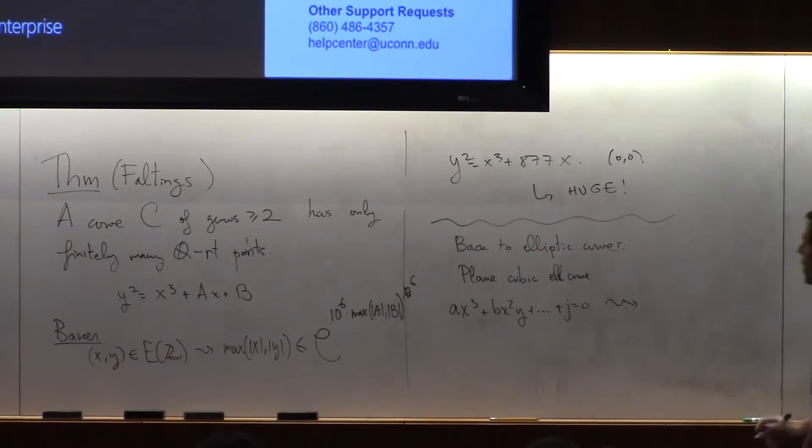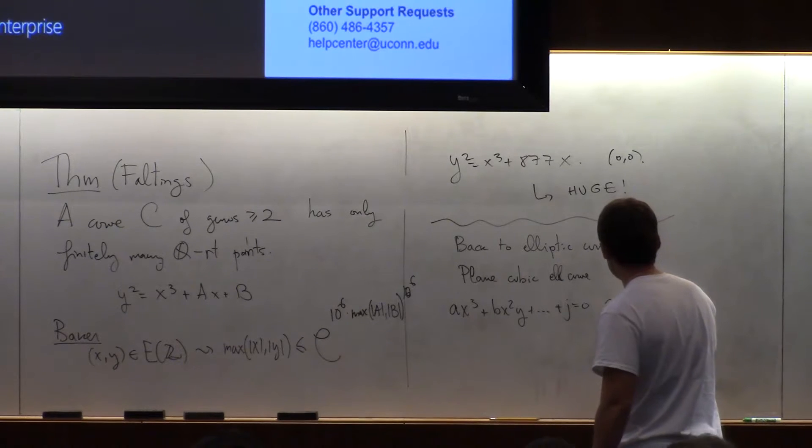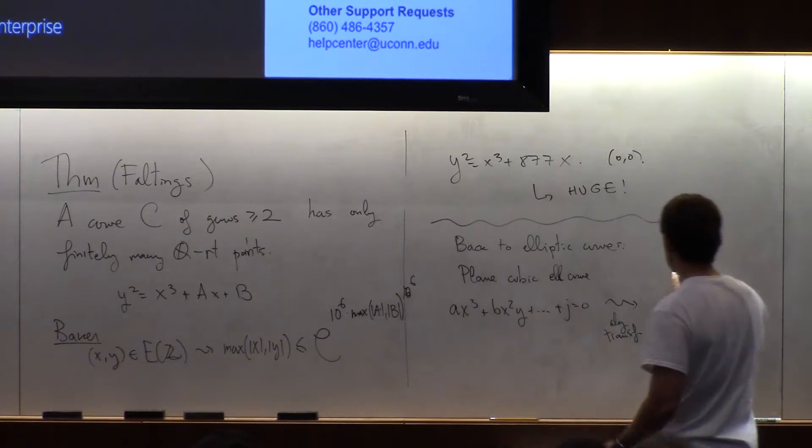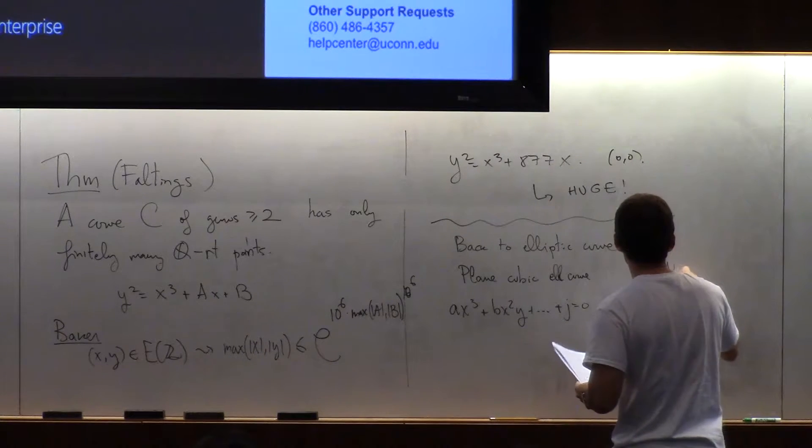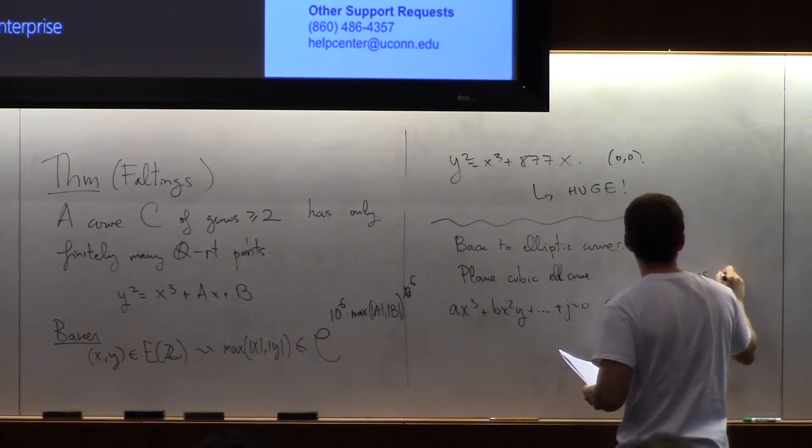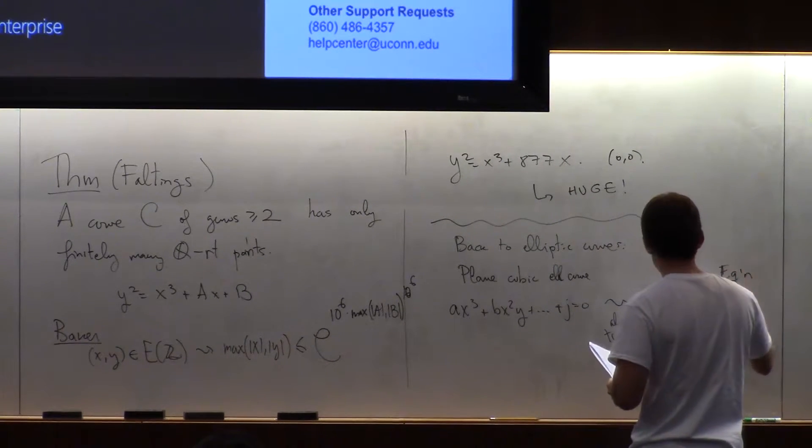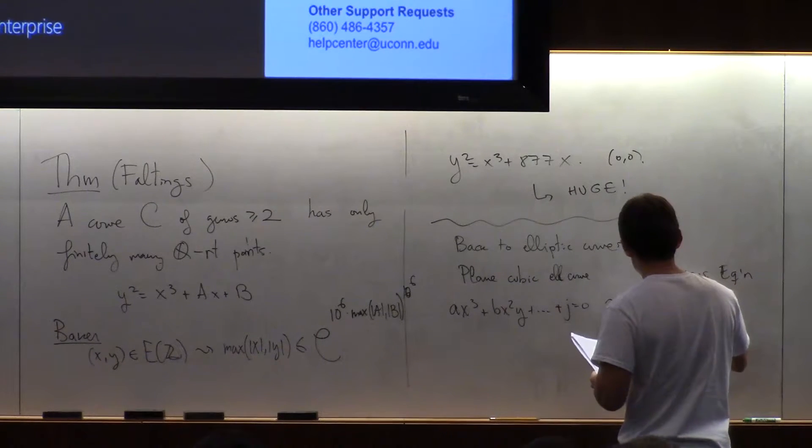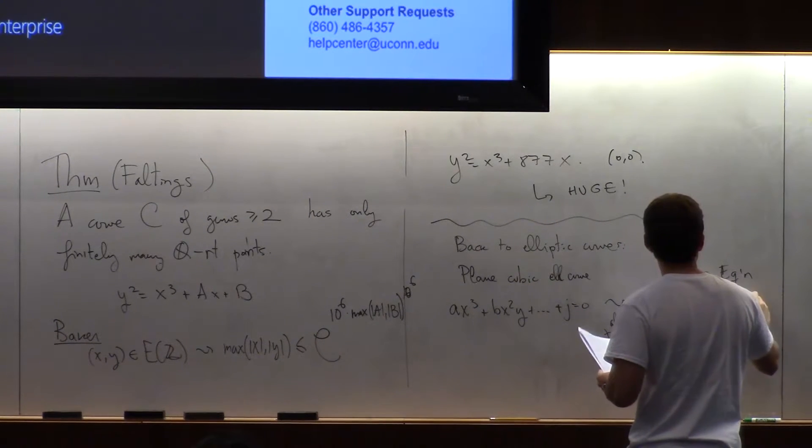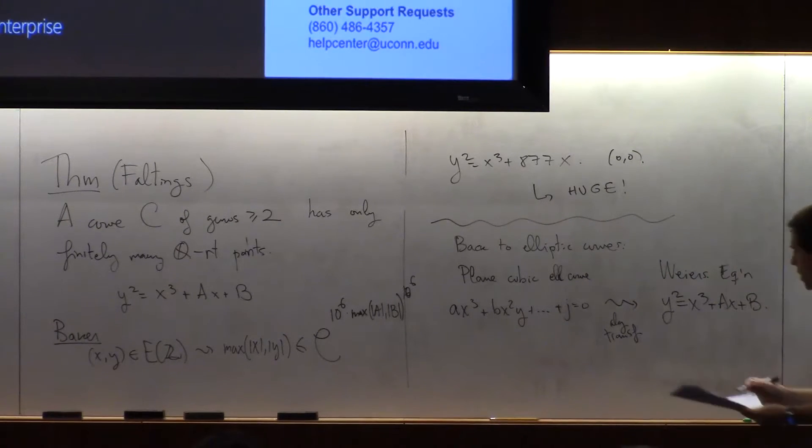So you can always find an algebraic transformation, some map that brings it to what's called a Weierstrass equation.